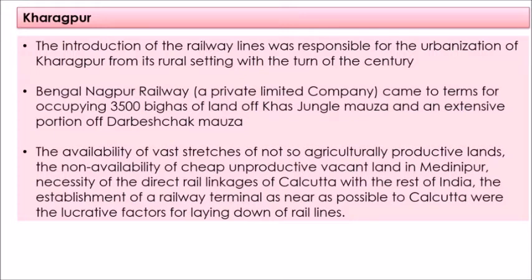The Bengal Nagpur Railway, a private limited company, acquired about 3,500 bighas or about 562 hectares of land for the establishment of the railway terminal. The reason Kharagpur was chosen was that there was no cheap, unproductive, vacant land in and around Medinipur town, and the availability of vast stretches of not-so-agriculturally-productive lands in Kharagpur made it a suitable place.